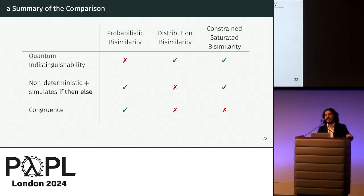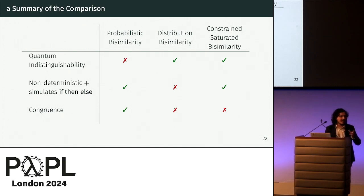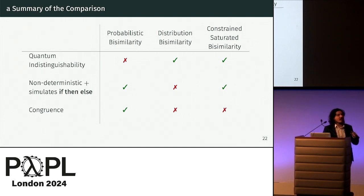Audience member: Have you modeled some quantum protocols in your process calculus? Speaker: Yes. We first tried with simple processes exemplifying non-determinism features. We tried with teleportation, which is maybe the simplest protocol. We also tried with cryptographic protocols, like coin flipping for untrusted parties, where we use non-determinism as part of the protocol, and we correctly pointed out flaws in this protocol which were not captured by previous proposals.